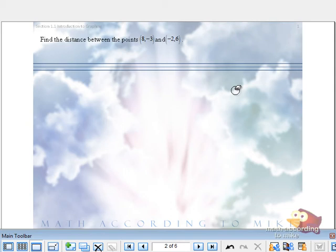Find the distance between the points 8, negative 3, and negative 2, comma 6. 8, negative 3, and negative 2, comma 6.